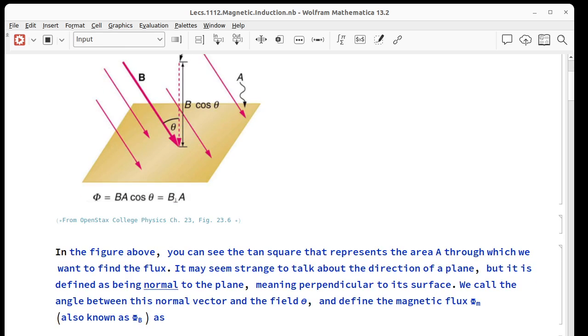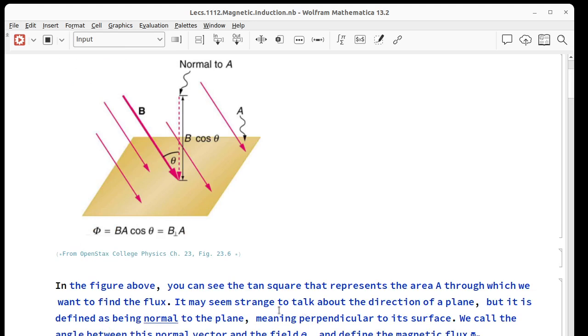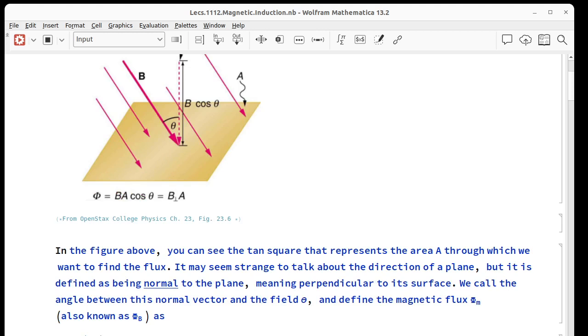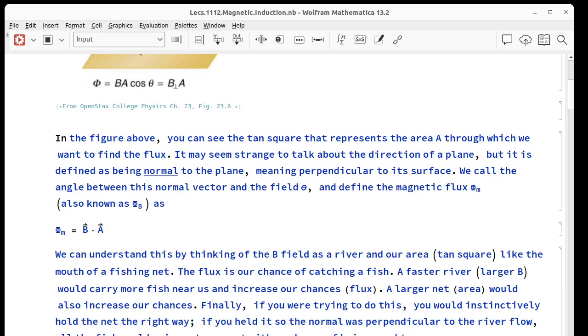If you hold the net the wrong way, there's a way you can hold it where all the river goes parallel to the mouth of it and no fish would ever have a chance of getting in there. So that's the cosine theta part. To maximize your chance of catching a fish, you'd have fast river, big net, and you'd hold it the right way.